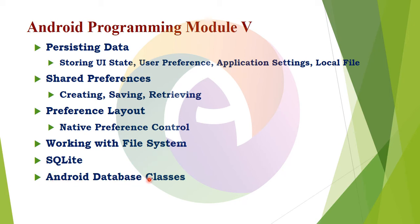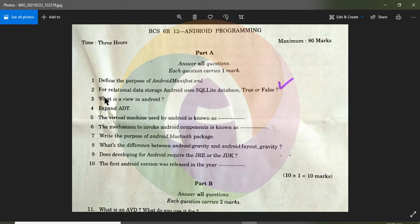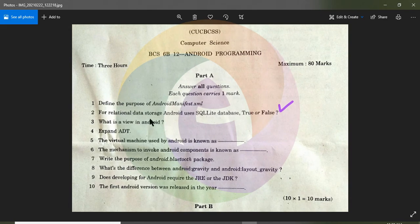Then, Android database classes — databases using classes, including 4 classes such as SQLiteOpenHelper. For relational data storage, Android uses the SQLite database.